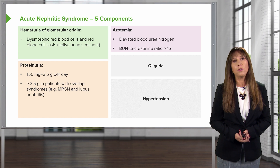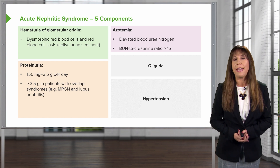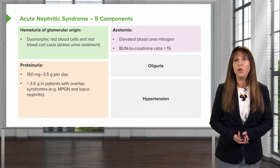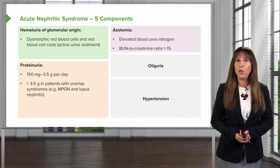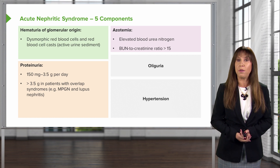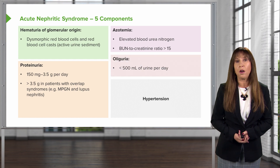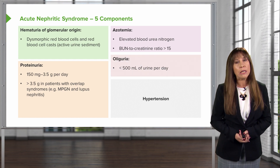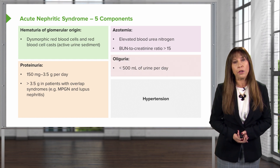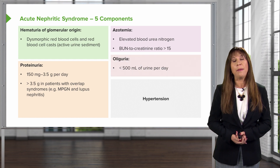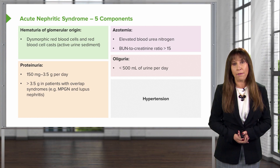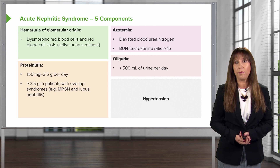Azotemia also characterizes nephritic syndrome, meaning we have an elevated blood urea nitrogen — typically, that BUN to creatinine ratio is greater than 15. Our patients are also classically oliguric, meaning they make less than 500 milliliters of urine per day.